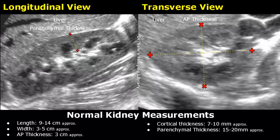Parenchymal thickness can also be measured in the longitudinal view. One caliper is placed here and the second caliper is placed right at the margin of the renal sinus, so we can measure the whole parenchymal thickness. It lies between 15 to 20 millimeters approximately.